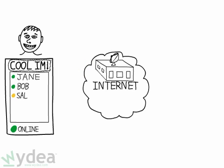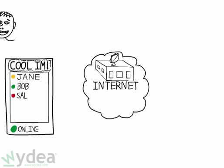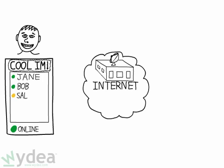Now you'll see a full list of your buddies that are currently online. As your friends sign in and out, you'll see them appear and disappear from your list. You'll also notice that the statuses of your friends automatically change from online to away to busy or offline, based on whether that person is logged in and using his or her computer.